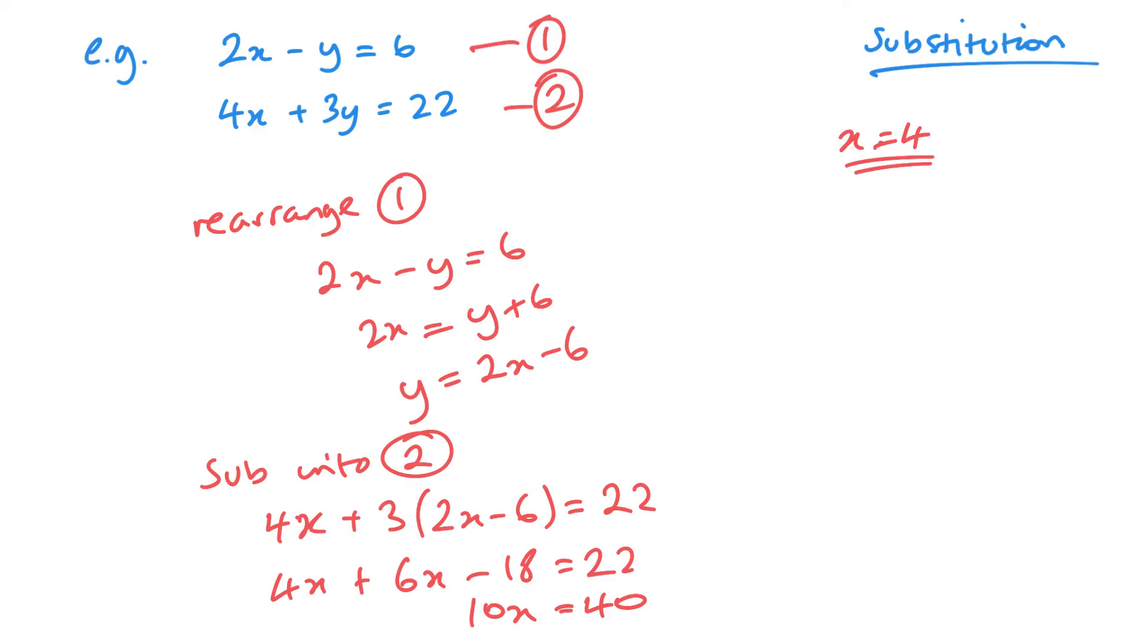And again, once I've got my first answer, the second part of solving this is the same every time, whichever method you use. So we just need to then substitute x equals 4 into any one of my equations. Now I'm going to call that one equation 3, and that's where I'm going to substitute it in as it's already rearranged for y. So y equals 2 lots of 4 minus 6, so 8 minus 6 is 2. Y equals 2. And there we have 4, 2, as we did previously.